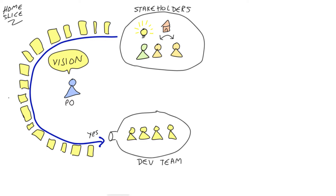Here's why: Malik works with a team of four developers. Let's say they can complete on average three to four stories per week. But ideas are easier to come up with than working software, and the stakeholders come up with, let's say, ten ideas on average per week. If Malik tries to satisfy all the stakeholders, pretty soon he'll get a huge, unmanageable backlog.